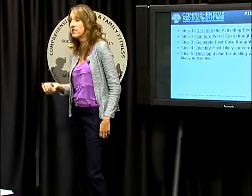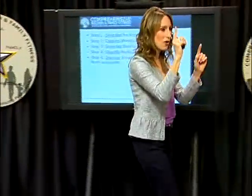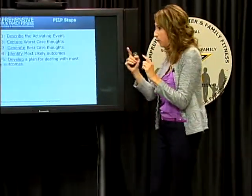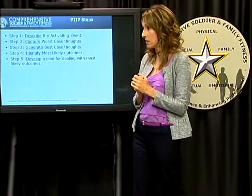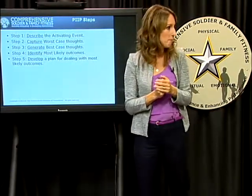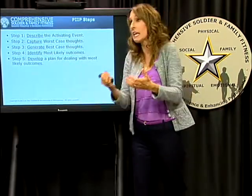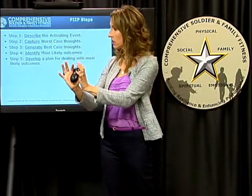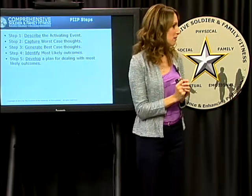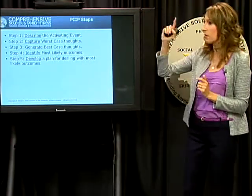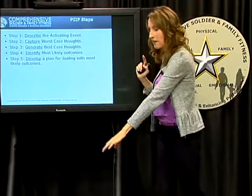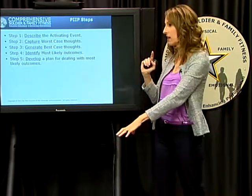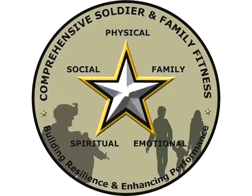Another question: what if the worst-case outcome is actually likely to happen? Sometimes the first one or two catastrophic thoughts are genuinely possible — if your first sergeant calls you in, there is a likelihood you might be in trouble. In that case, move it to the most likely column and plan for it. Where it becomes a runaway train is when those worst-case thoughts keep going further and further until you're all the way down at the bottom with thoughts that have no bearing on reality. Working the skill brings you out of that. You'll discuss this further with your MRT.